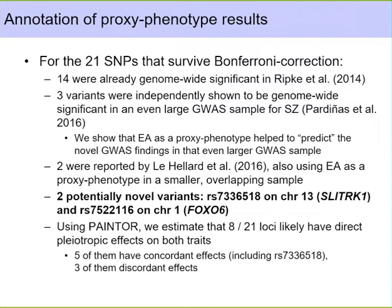Looking at the 21 SNPs that survived Bonferroni correction: 14 were already genome-wide significant in the Ripke et al. study, leaving 7 potentially novel. By the time we had these results, a new larger schizophrenia GWAS by Pardiñas et al. had appeared on bioRxiv, and 3 of our variants also turned out to be genome-wide significant there. This suggests that using educational attainment as a proxy phenotype helped predict novel GWAS findings in the larger Pardiñas et al. sample — education hits can be seen as a glimpse into the future of schizophrenia research, though they don't tell you the direction of effect.